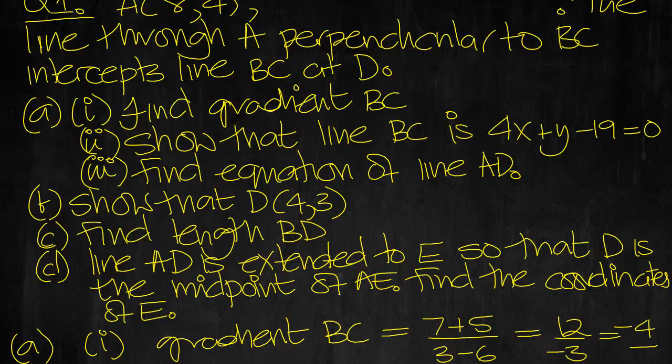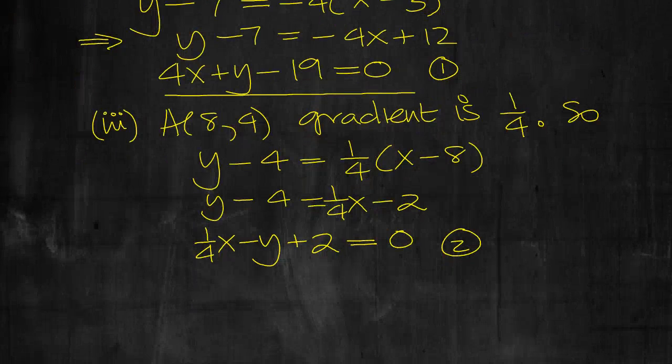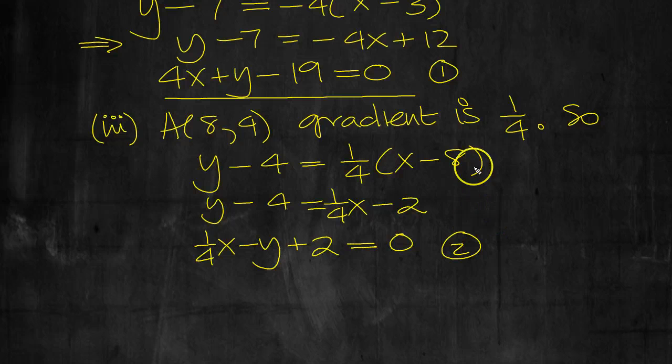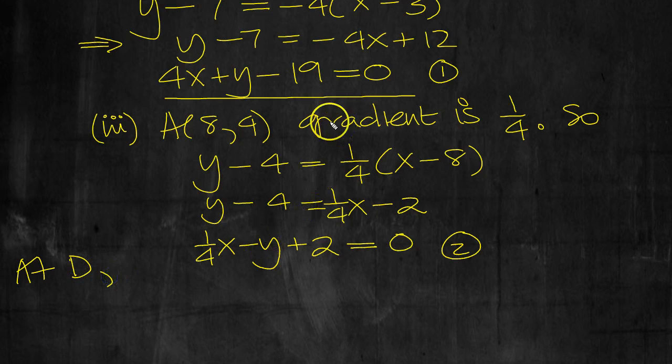So that was the line perpendicular to BC through A, and it intersects the line BC at D. So where these two meet then is D. At D, let's do equation 1 plus equation 2 where these lines meet. We'll add them because the Y and the minus Y will cancel.